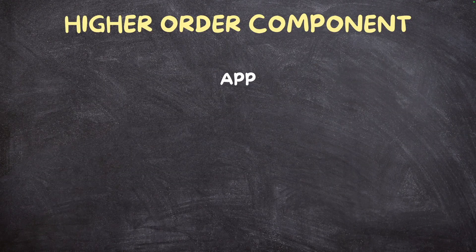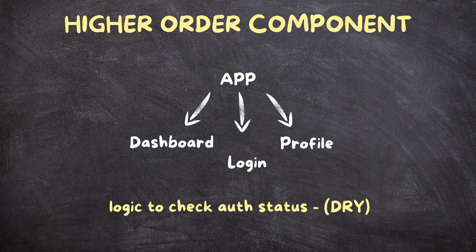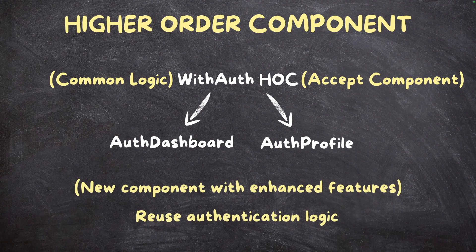Higher order components are an advanced design pattern in React for reusing component logic. Here we have a simple app component with three components inside it: the Dashboard component, the Profile component, and the Login component. We need to build logic that checks whether the user is authenticated. If authenticated, we navigate the user to the dashboard or profile page without repeating ourselves. So we create a withAuth HOC — a higher order component function — which accepts a component and contains some common logic. This auth component returns a new component with enhanced features, allowing us to reuse our authentication logic.